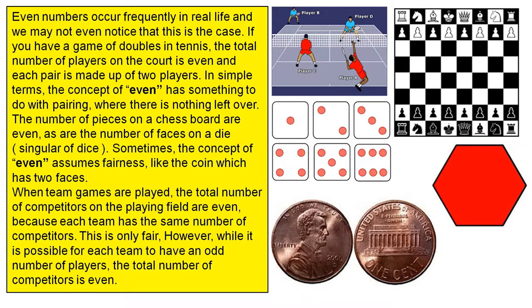The number of pieces on a chessboard are even, as are the number of faces on a die. Sometimes the concept of even assumes fairness, like the coin which has two faces.